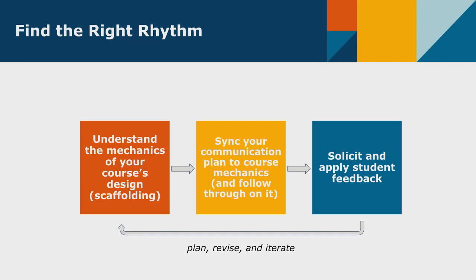The first step is to understand the mechanics of your course design — the flow of learning, including where students work through content and activities and where instructor intervention is needed. Once you understand the structure of learning built across the course, you can sync your communication plan to it, and then follow through on it. The third step is to determine if things are working for your students by soliciting and applying feedback — an iterative cycle because courses evolve over time.